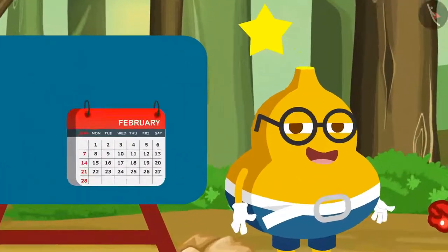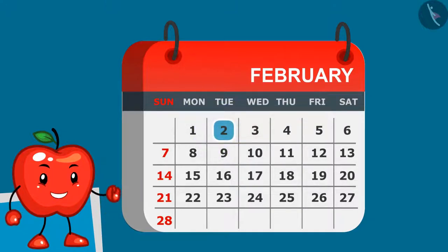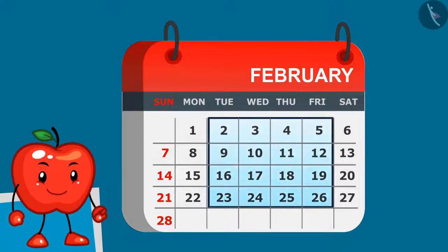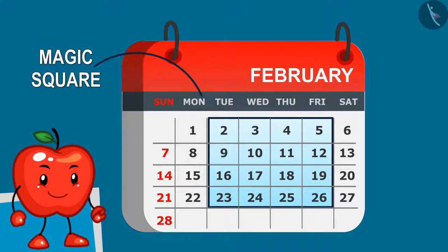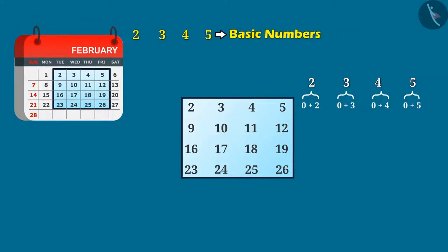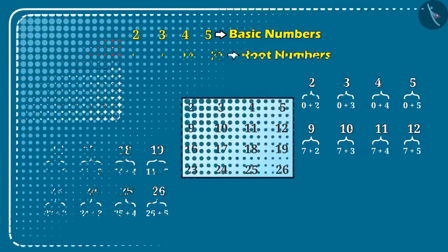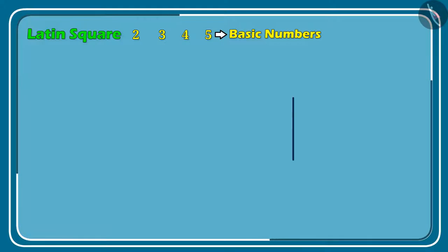Appy thinks for a while and says: in the square, the top left corner number is 2 and the square is of fourth order, so the square is this. I can make it a complete magic square. Let me show you how. Here, these are the basic numbers and these are the root numbers. Now I will make a Latin square by using the basic numbers.